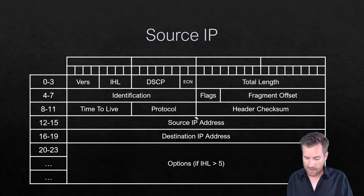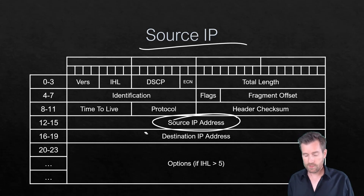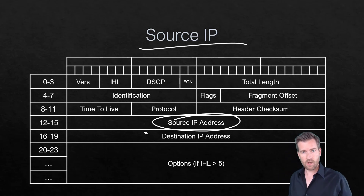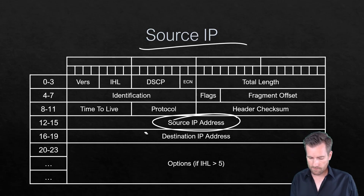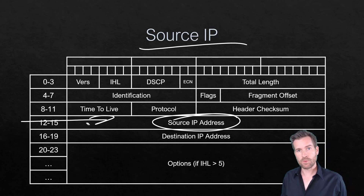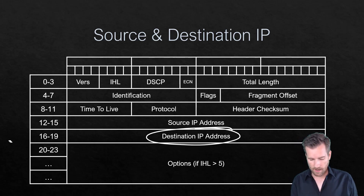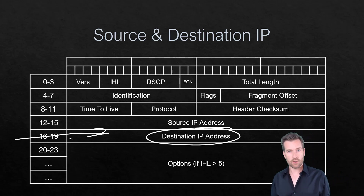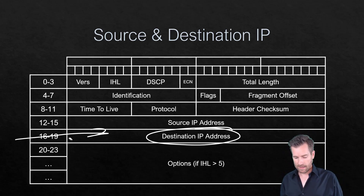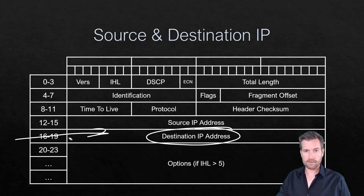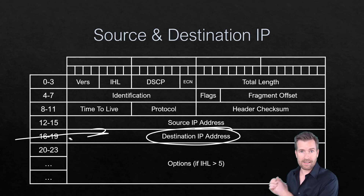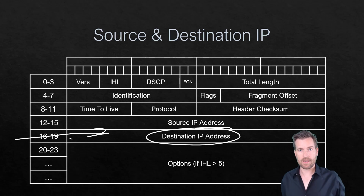Finally, we have the Source IP address and Destination IP address. Each is 4 octets, or 32 bits long. The layer 3 router uses the destination IP address to determine where to forward the packet next on its journey to the final destination.